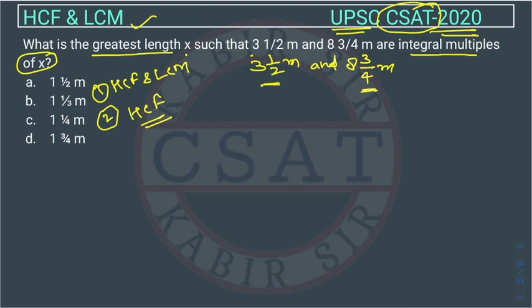One method, method one to solve this is using options. Using options you can check are we able to divide both these numbers or not right.